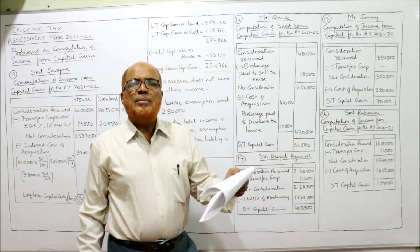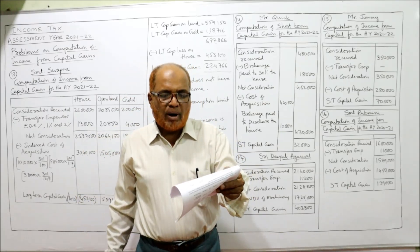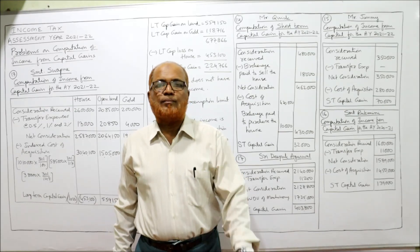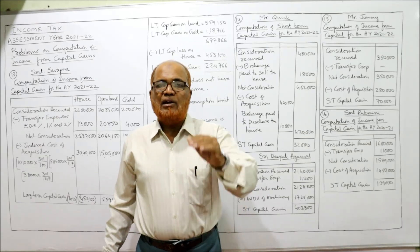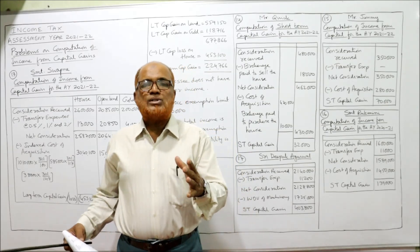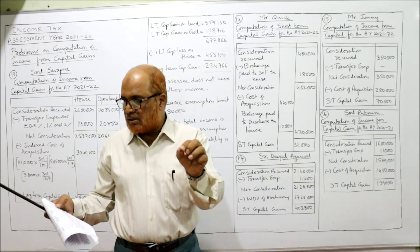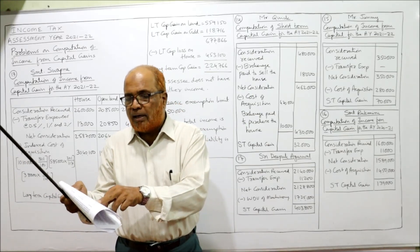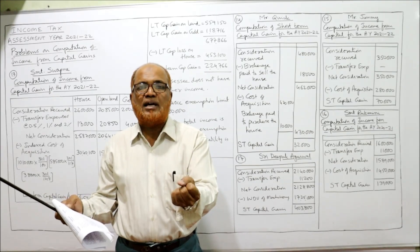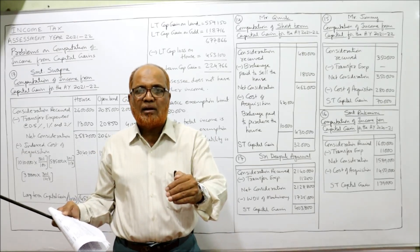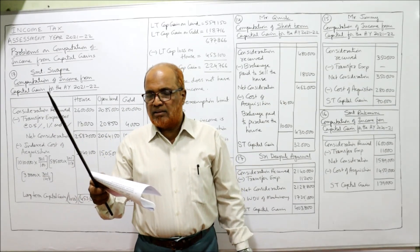Problem 15: Mr. Jimmy purchased equity shares listed on a limited company on 14th December 2019 for Rs. 2,80,000 and sold the same on 24th March 2020 for Rs. 3,50,000. For equity shares, if held for less than one year it is short-term; if held for more than one year it is long-term. Mr. Jimmy held the shares from December to March — only 3 months — so it is a short-term capital gain. The cost inflation index for 2021 was 301, but this should be ignored for short-term capital gain.